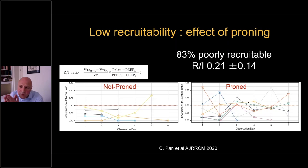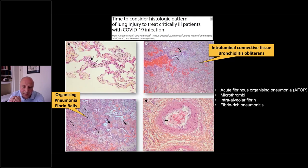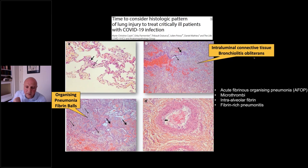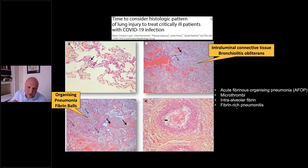One of the reasons these patients might not be recruitable has to do with the pathology of COVID-19. From a letter I think is very interesting, most of the pathology is an organizing pneumonia with fibrin balls, which is clearly not a PEEP-responsive disease. There is also bronchiolitis obliterans, again not necessarily PEEP-responsive. Pathology reports from around the world show an increased incidence of acute fibrinous organizing pneumonia (AFOP), increased numbers of microthrombi, intraalveolar fibrin, and fibrin-rich pneumonitis — slightly different from inflammatory edema, which is very recruitable.